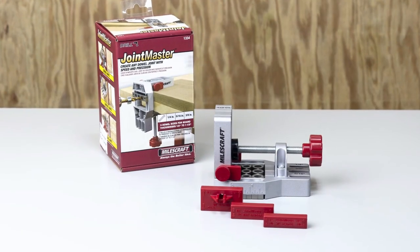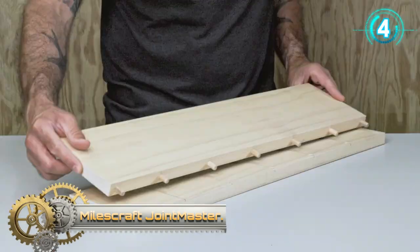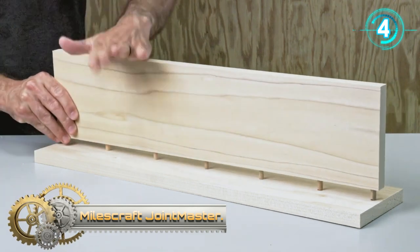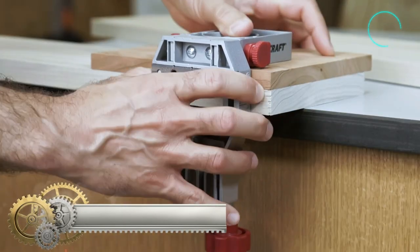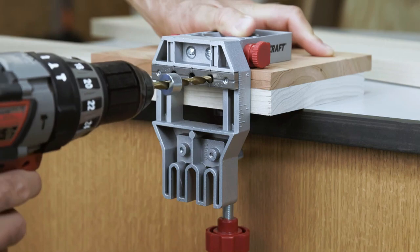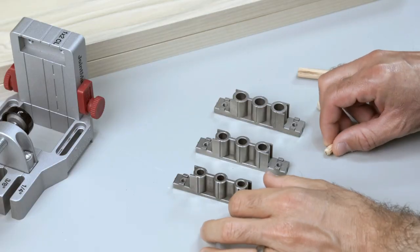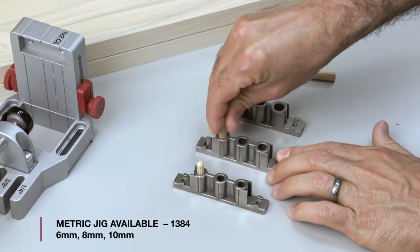Milescraft Joint Mister. The Joint Mister comes with three drill blocks and is capable of creating joints using the most common dowel pin sizes: 1/4 inch, 5/16 inch, and 3/8 inch.